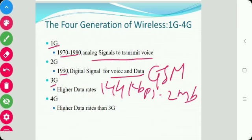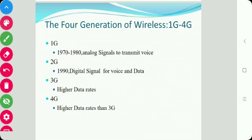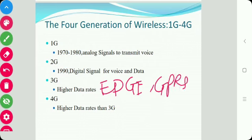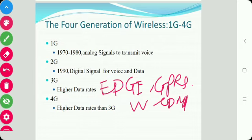3G typically uses packet switching using CDMA. Examples of 3G include GPRS and WCDMA. The fourth generation, 4G, will provide much higher data rates in excess of 20 Mbps and was expected to be deployed around 2006 to 2009. It was still unclear at the time what exactly would differentiate 4G from 3G.